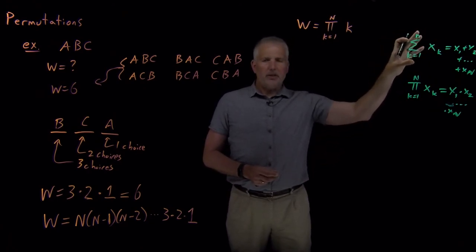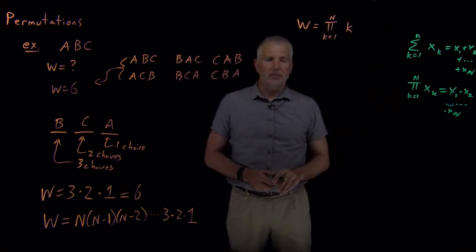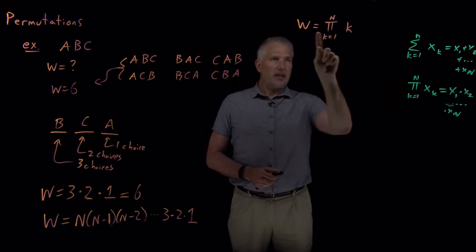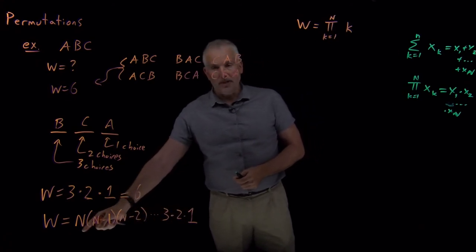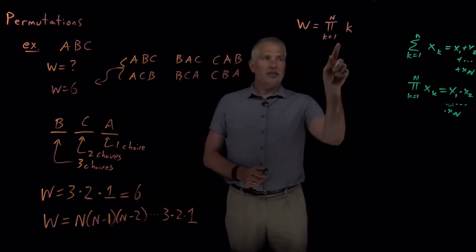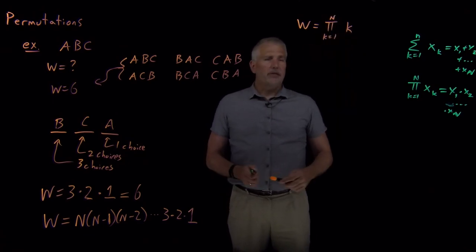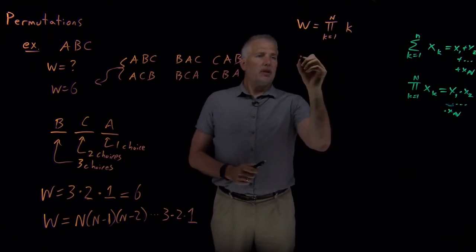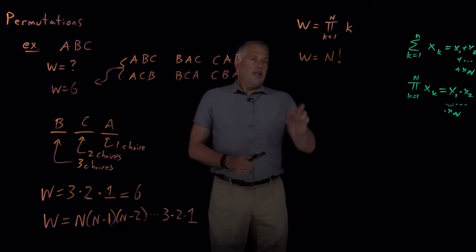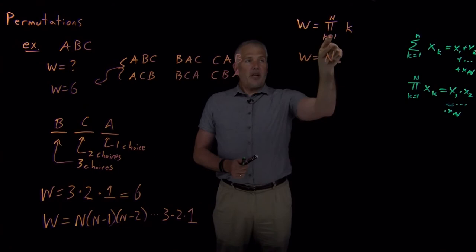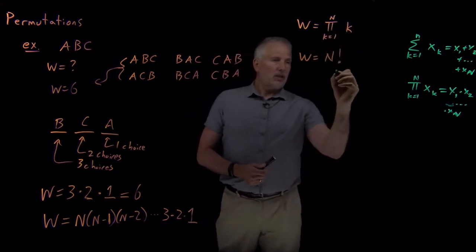You've likely seen summation notation before. Product notation you may or may not have seen before. It just means take the product of all these things. So a much shorter way of writing 1 times 2 times 3 times all the way up to N is to say take the product of all the numbers from 1 running up through N. And because even that is a little cumbersome sometimes, we can also write down the same thing this way.